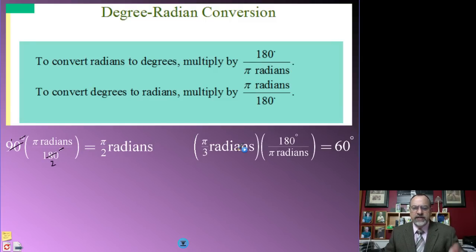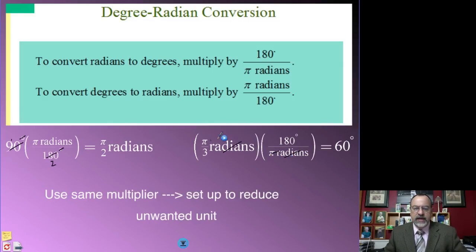If I begin with radians, I just simply flip that unit multiplier over so the radians reduce, and then I reduce everything else that I can. So the π reduces with π, and then the 3 goes into 180 60 times, so I end up with 60 degrees. We use the same unit multiplier, we just need to set it up so that the units that we don't want reduce out.